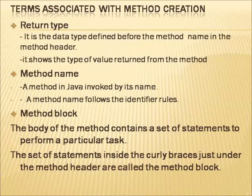Here we can see the return type. Return type is the data type defined before the method name in the method header. In the example we use the return type void before checkPrime. We use the keyword void when that particular method does not return any value. The return type shows the type of value returned from the method.